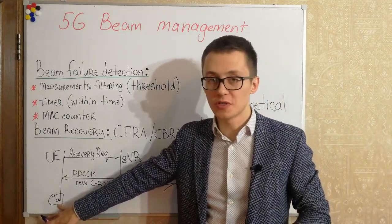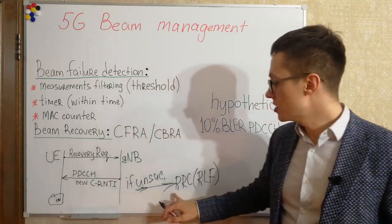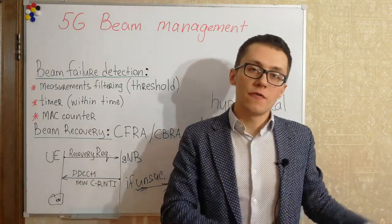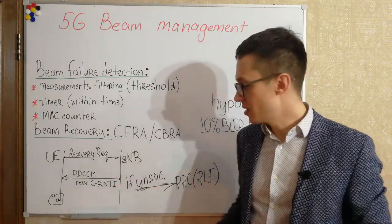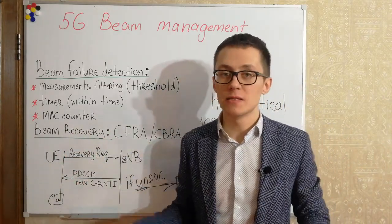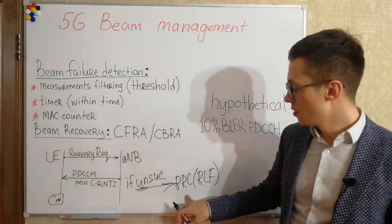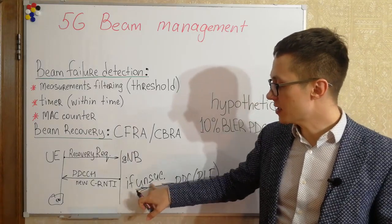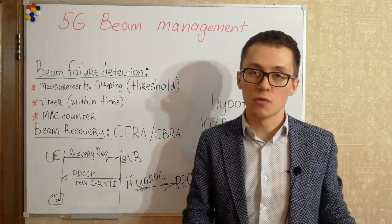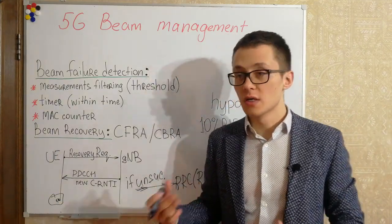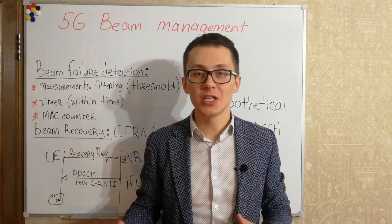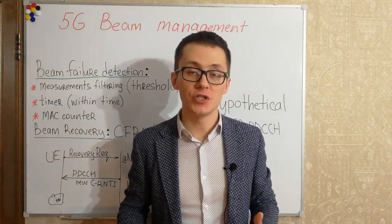If the BIM failure recovery is successful, the RRC level does not know anything about it. BIM refinement, BIM switching, BIM sweeping, and BIM failure recovery are all about the physical layer and MAC layer in most cases. Only in case of unsuccessful recovery does the RRC level understand that there were unsuccessful attempts to recover. It was my short lesson about BIM management and BIM failure recovery in 5G networks.